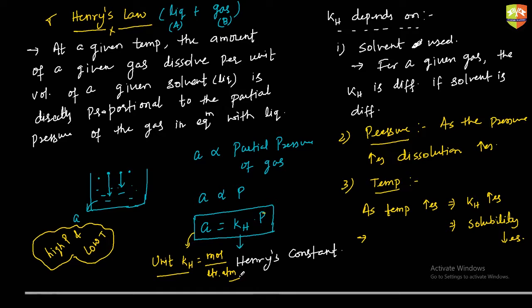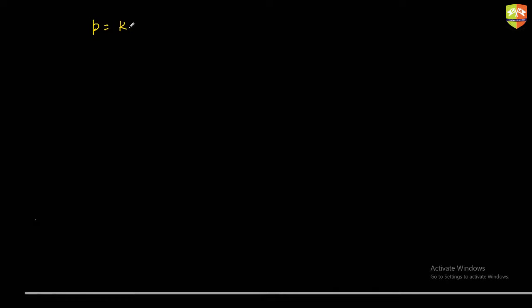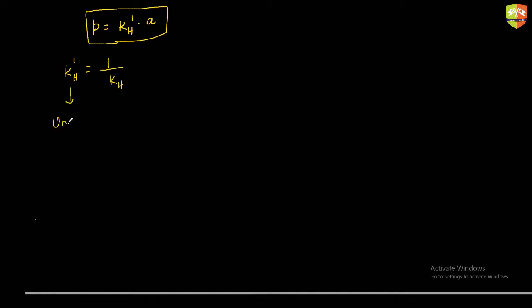We can also rearrange to write P = KH' × A, where KH' is another Henry's constant equal to 1/KH. The unit of KH' will be litre·ATM per mole. This is another form of the expression for Henry's Law.